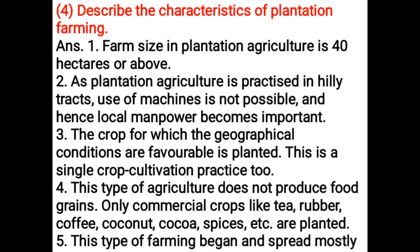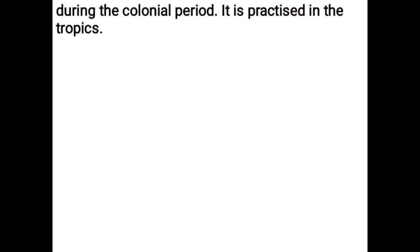Describe the characteristics of plantation farming. Farm size in plantation agriculture is 40 hectares or above. Since it is practiced in hilly tracks, use of machines is not possible, making local manpower important. The crop for which geographical conditions are favorable is planted — this is a single crop cultivation. It does not produce food grains; only commercial crops like tea, rubber, coffee, coconut, cocoa, and spices are planted. Plantation farming began and spread mostly during the colonial period and is practiced in the tropics.